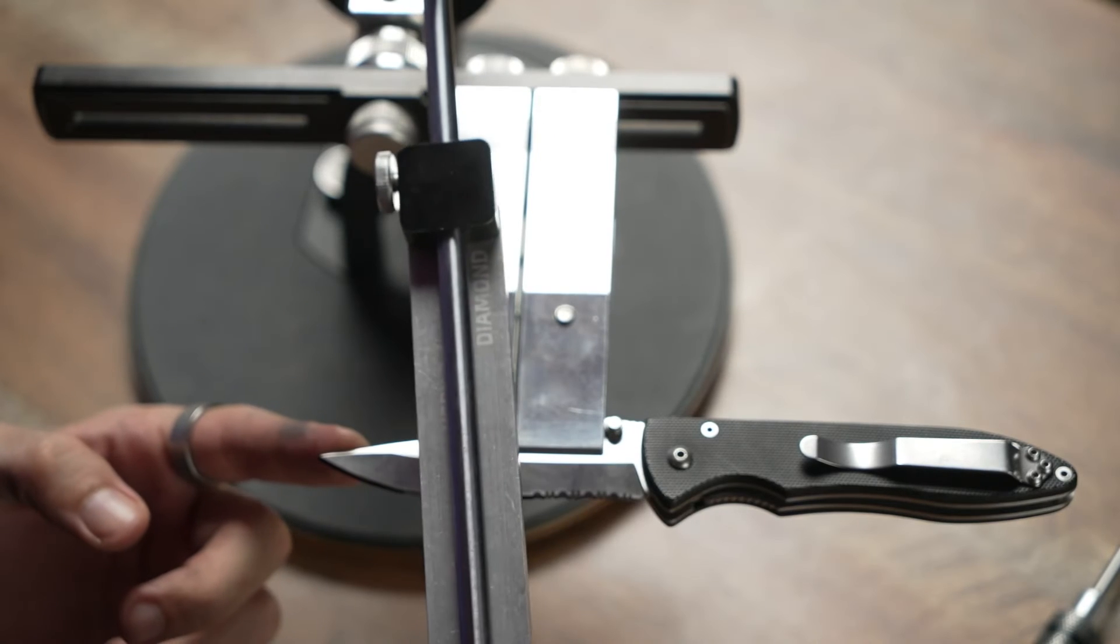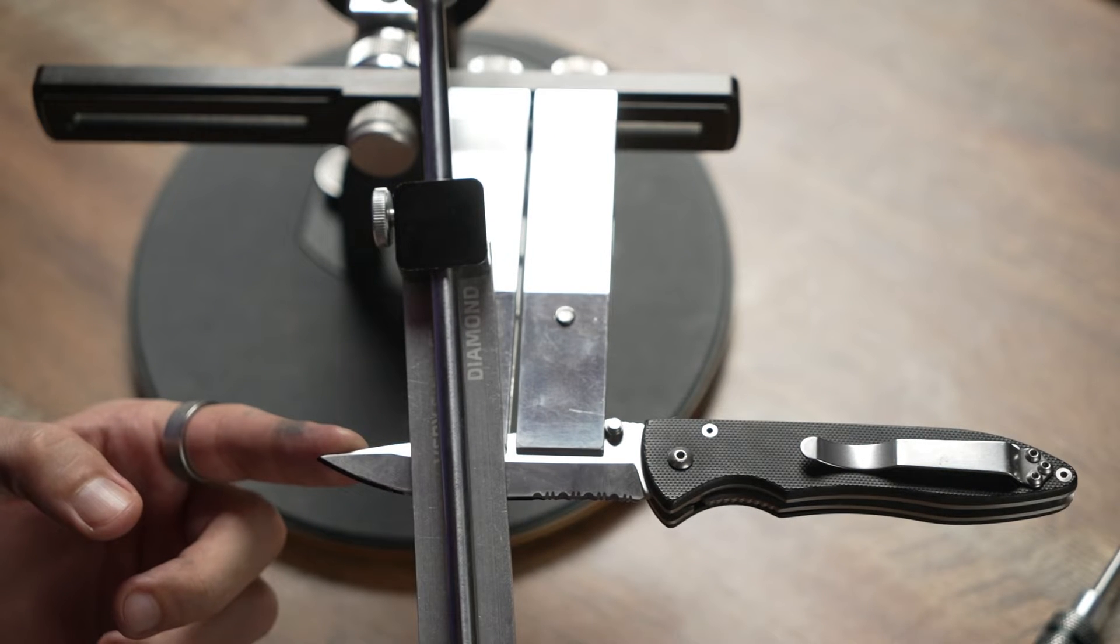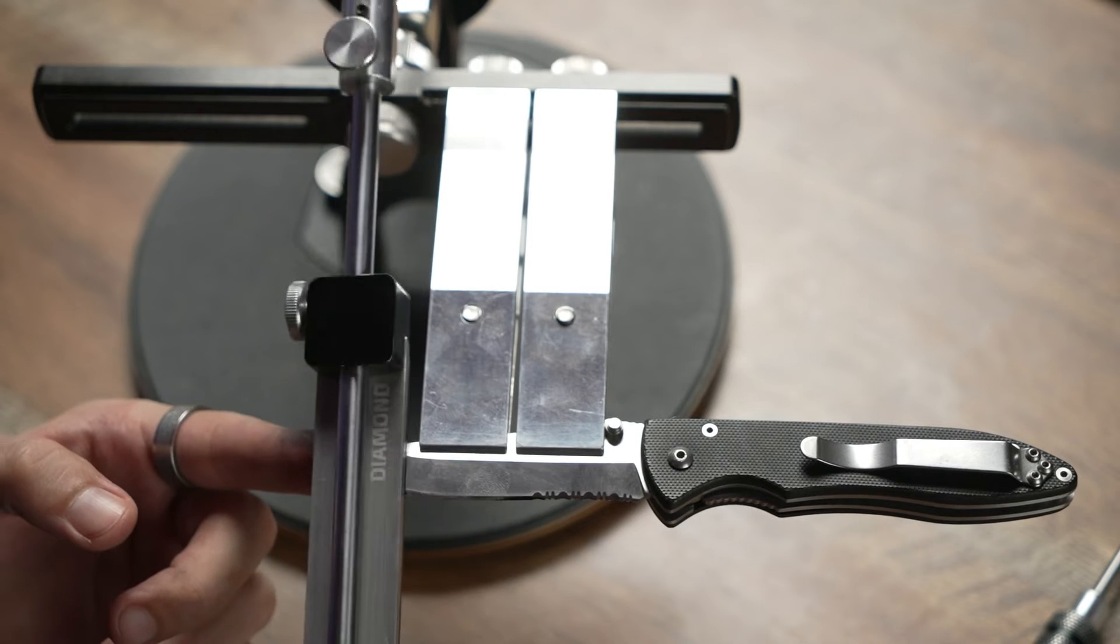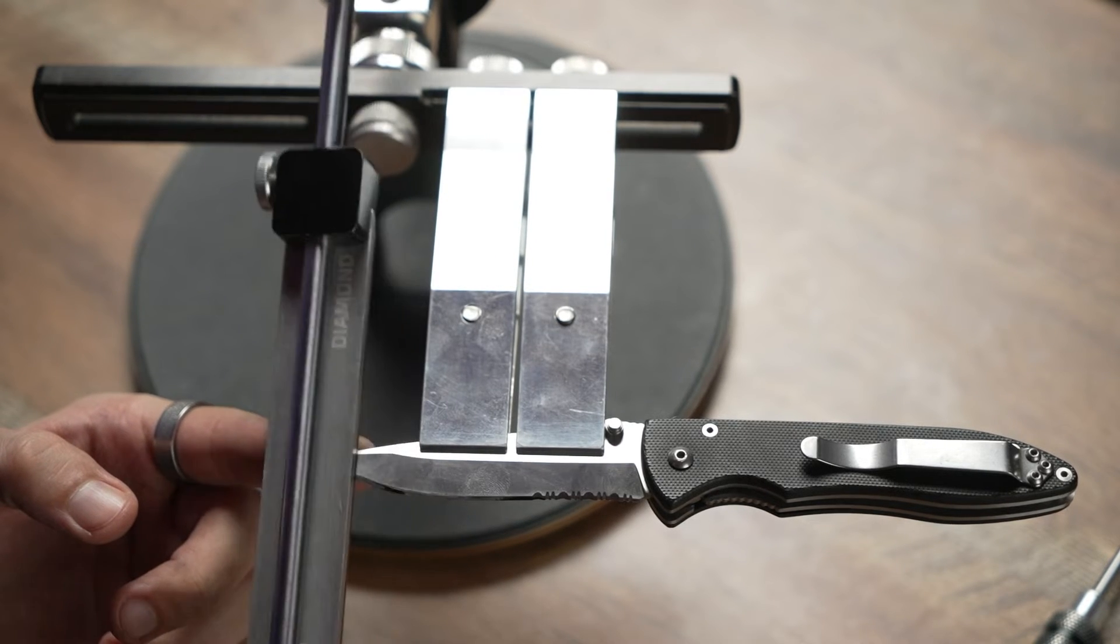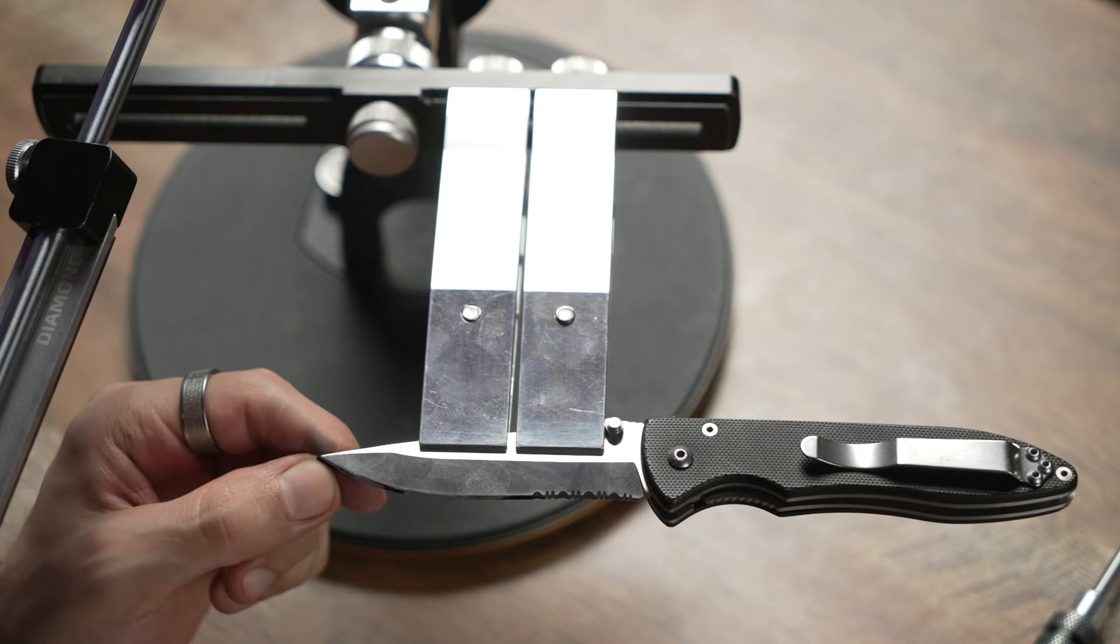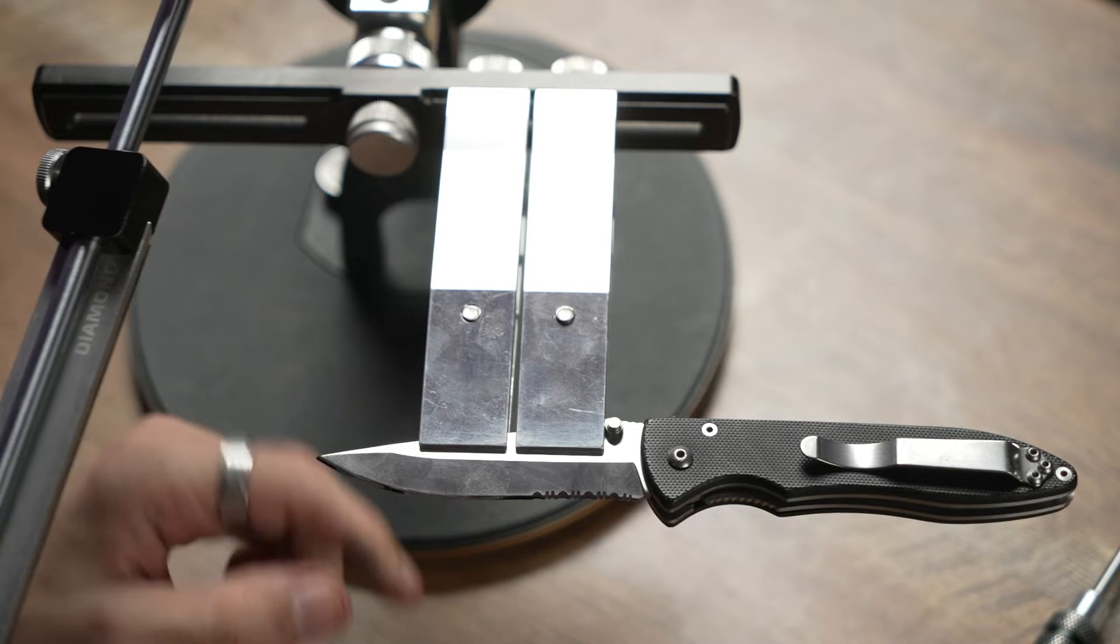If we see that the plain section of the knife is processed as it should, but closer to the tip the marker remains on the cutting edge or on the top border of the bevel, we will have to change the positioning of the knife.